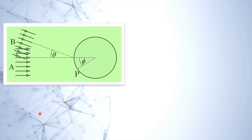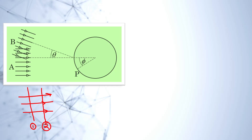Now let's come to the solution. First, we need to revisit the concept of wavefront. If a plane progressive wave is going in the rightward direction, the wavefront is going to be perpendicular to the direction of propagation. If the perpendicular distance between two wavefronts is one wavelength lambda, then for any point on the first wavefront and any point on the second wavefront, the path difference is going to be lambda. We will use only this property for solving this question.